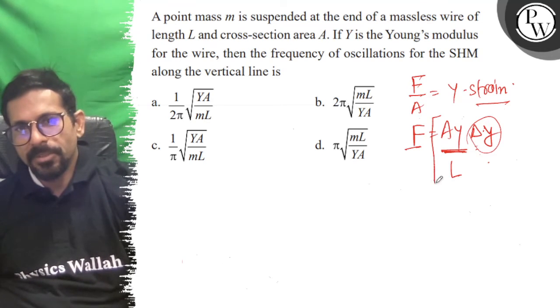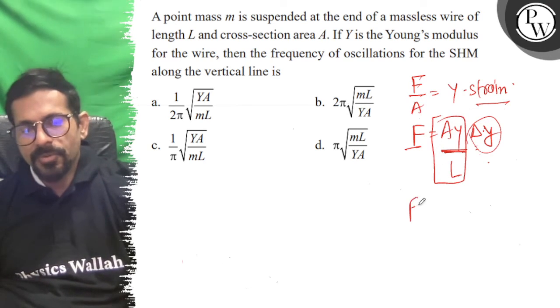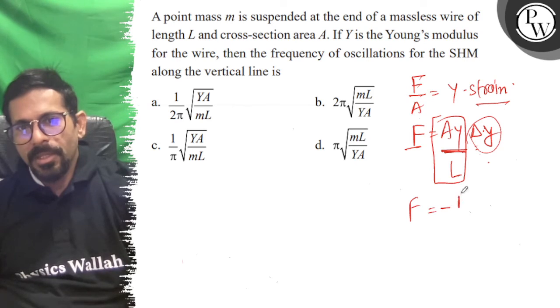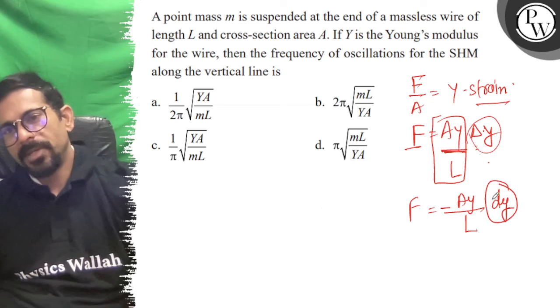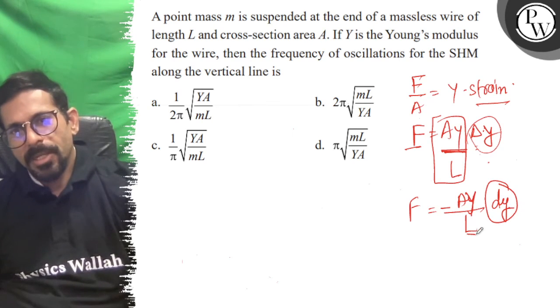So this will be your spring constant K. Force will be minus A Y over L times del Y. Del Y is the displacement in the Y direction, Y is the Young's modulus, L is the length.